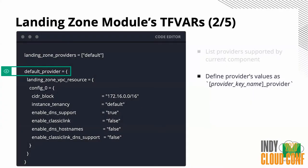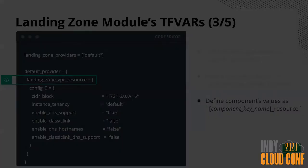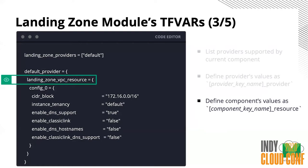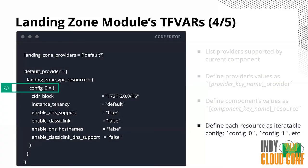This is how you define the variables in the TFVars files. The first layer: you put the provider key name and then underscore provider — so in this case it's default_provider. Going a level deeper, you can have multiple components here. I'm only showing the VPC component: landing_zone_vpc_resource. And since in the component itself we're using count, we put config as a prefix, then zero, one, two, three to iterate through all of the definitions from the TFVars.